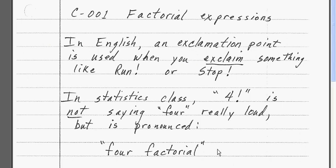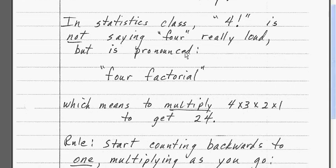Now in English, an exclamation point is used when you exclaim something like 'run!' or 'stop!' So in statistics class, students see an expression like this and they would say 'four!' But that's really not what we have in mind. What we're talking about in statistics with the exclamation point is to pronounce that 'four factorial,' which means that we are going to multiply starting with the four, then times three times two times one, and that answer gives us 24.